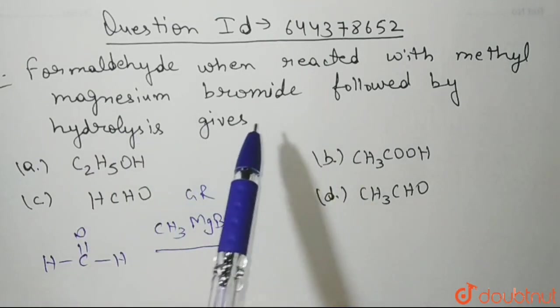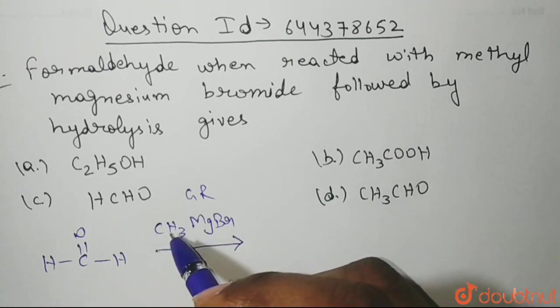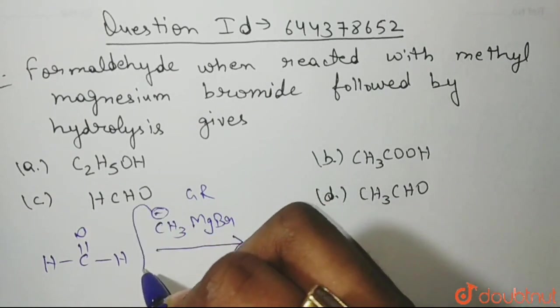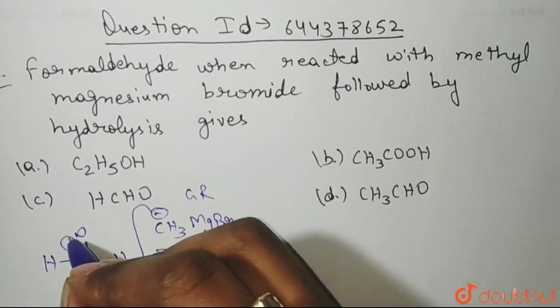So what will happen here? We know that Mg has a partial positive charge and CH3 has a partial negative charge. So because it will have a negative charge, it will go and attack the electrophilic center, that is the carbonyl carbon. It will attack at the carbonyl carbon, C double bond O.